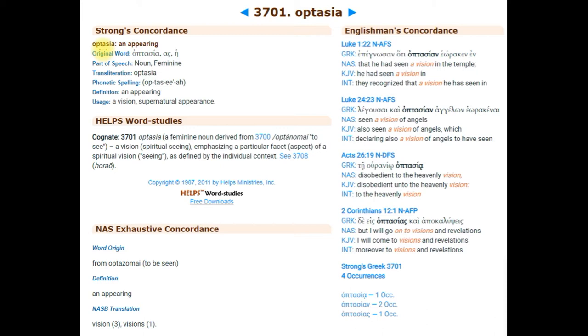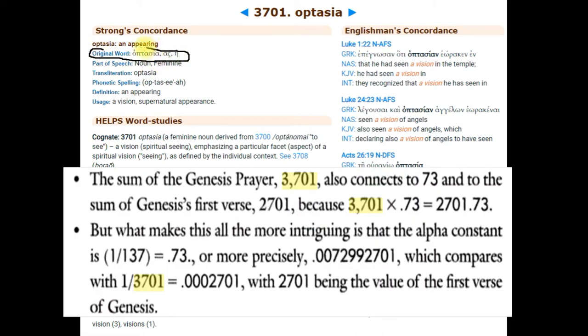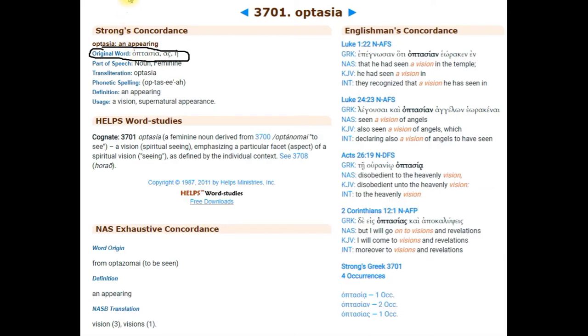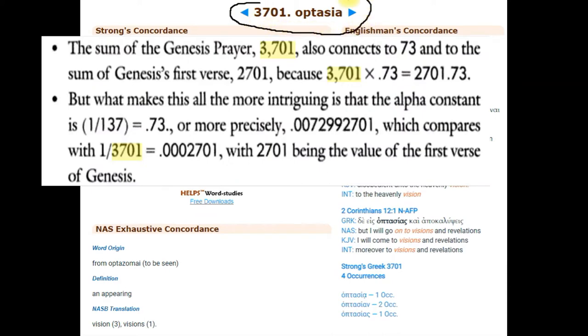The Greek word Aptasia, a feminine noun, meaning an appearing, a vision, a supernatural appearance. In Strong's Concordance, it's number 3701.